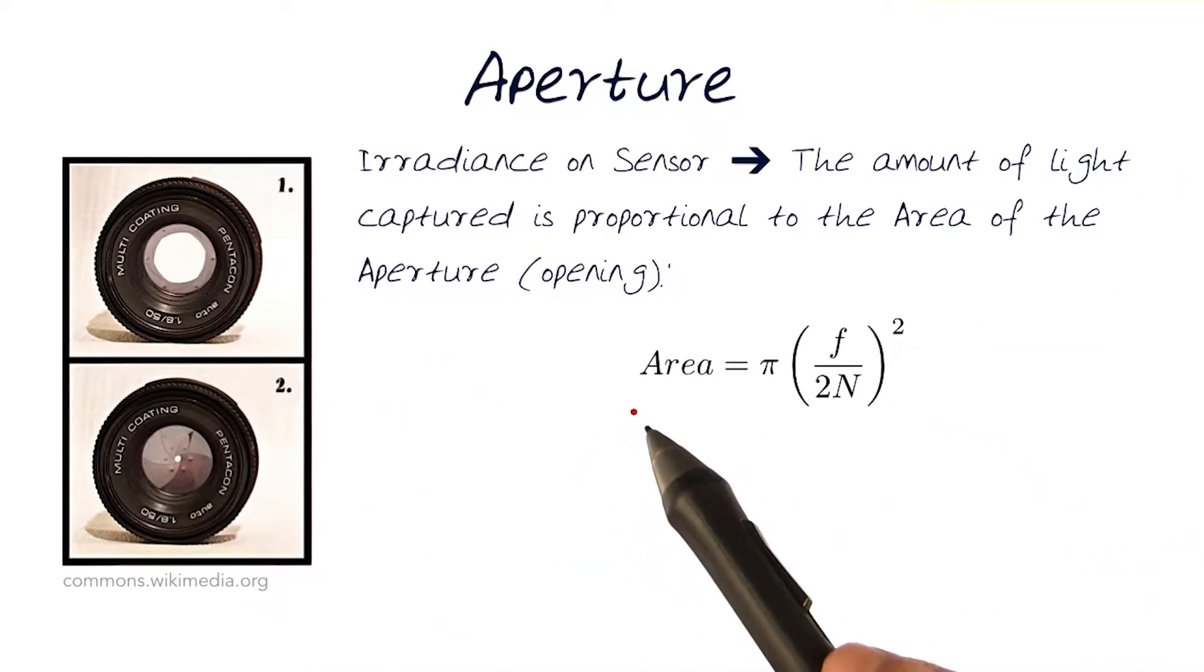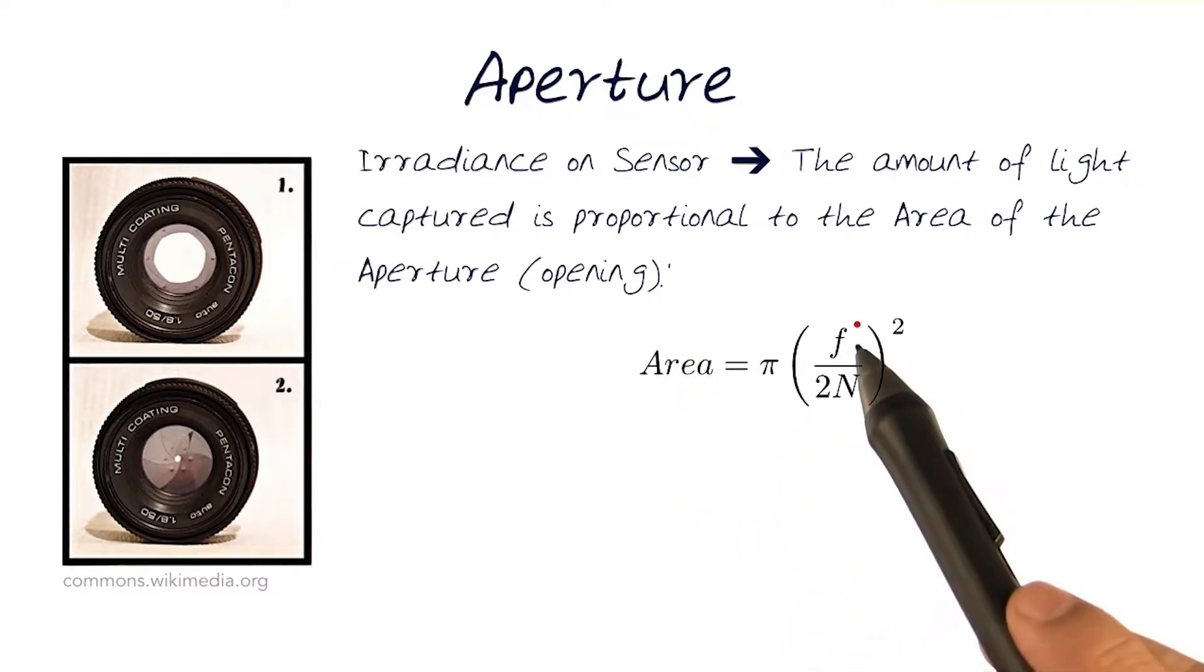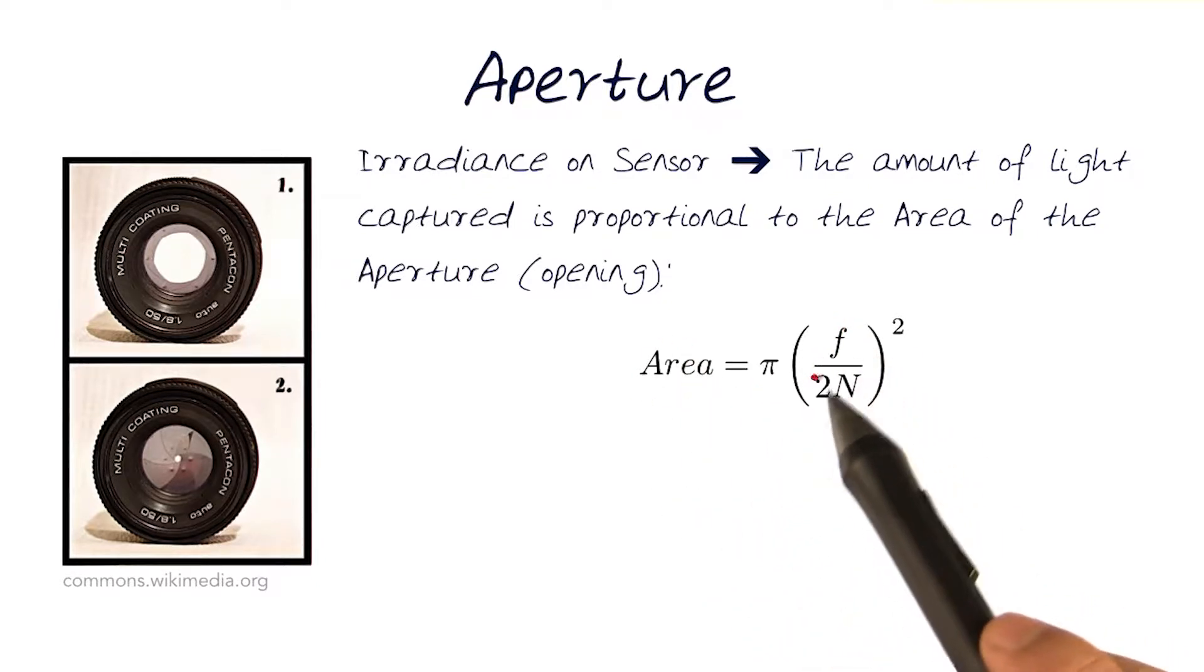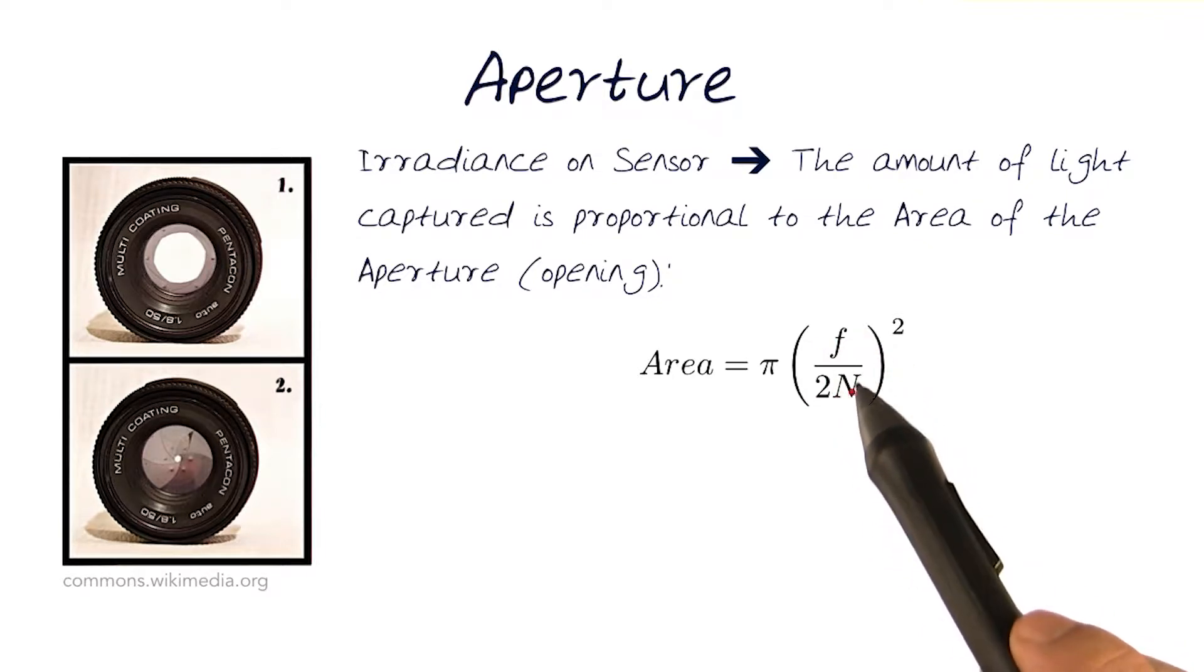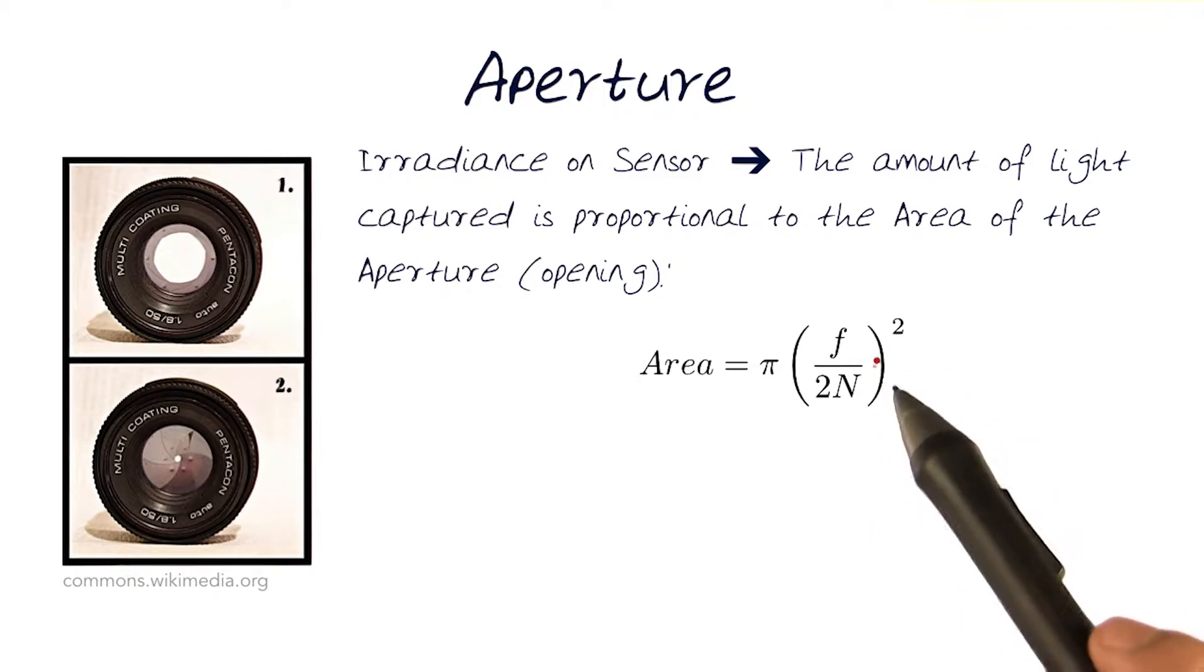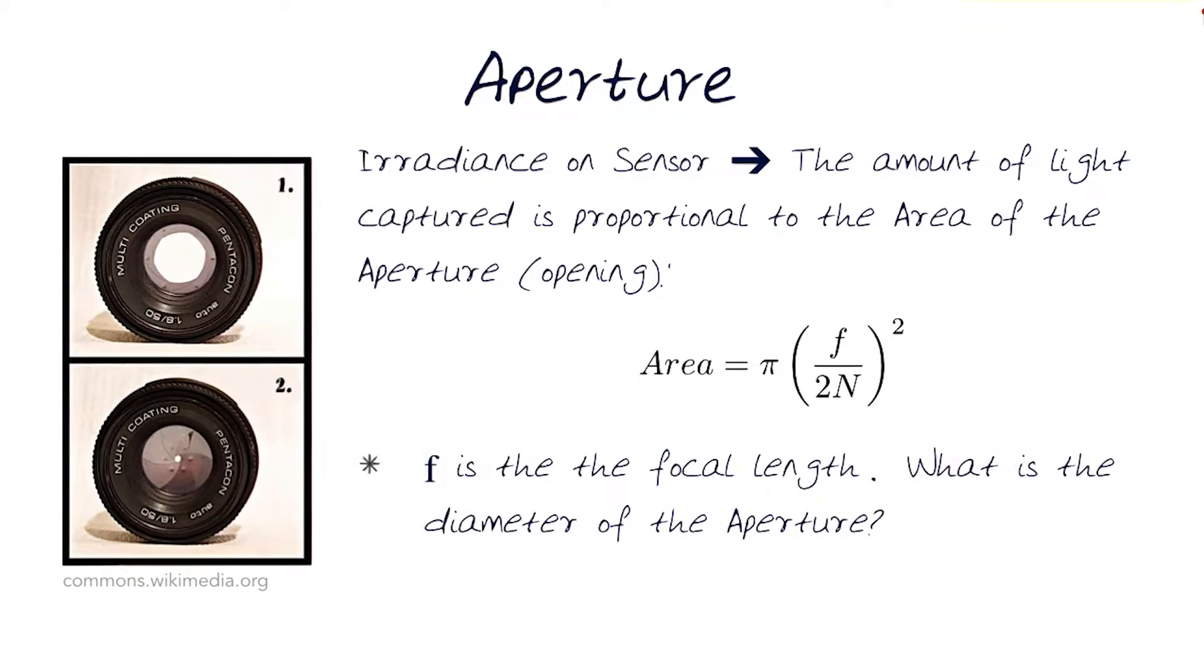Traditionally, when you do the simple math, you can see that the area really depends on π(f/2N)², where f is the focal length, and N is the number we'll talk about in a second. Here, f is the focal length of the lens being used. You can start looking at how does one compute the area of something here, and based on this, can we actually figure out what is the diameter of the aperture?